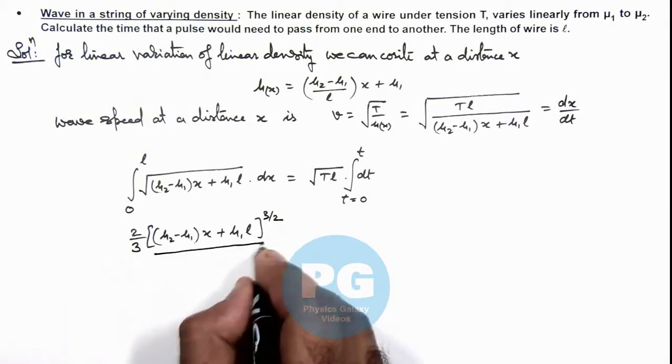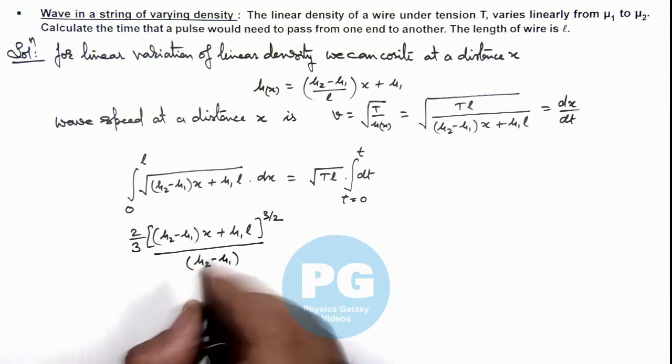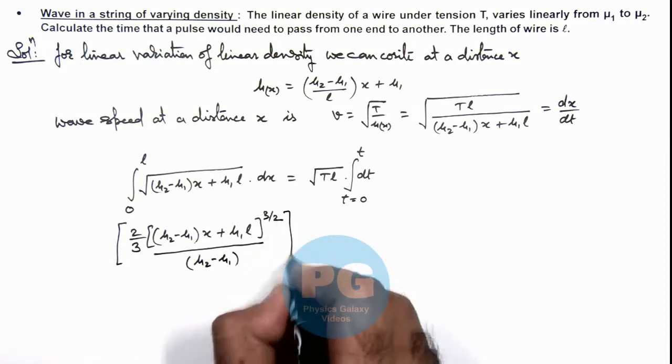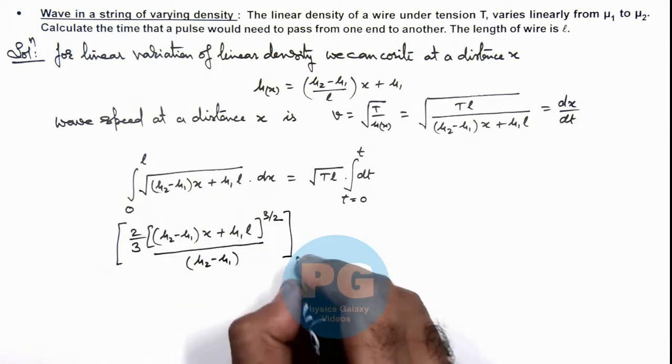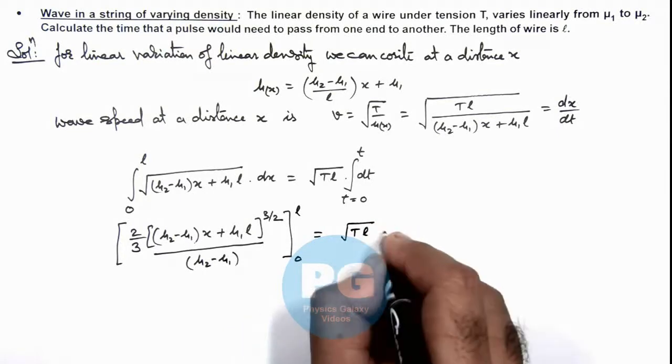The whole divided by (μ2 - μ1), the coefficient of x, and we substitute the limit onto the result from 0 to L. And this is equal to √(TL) times t.